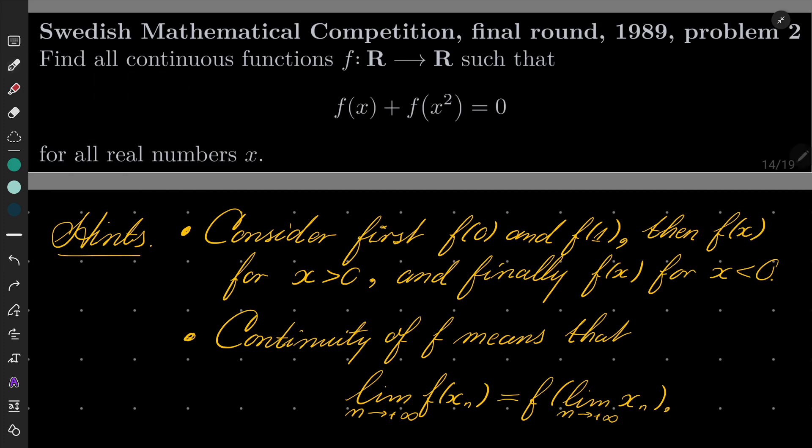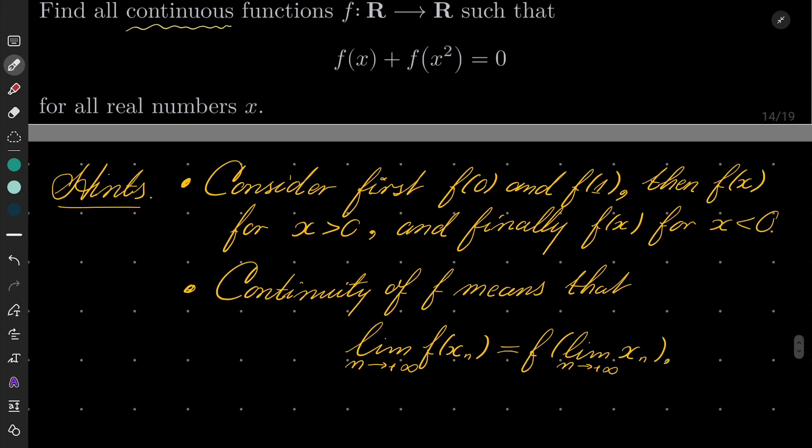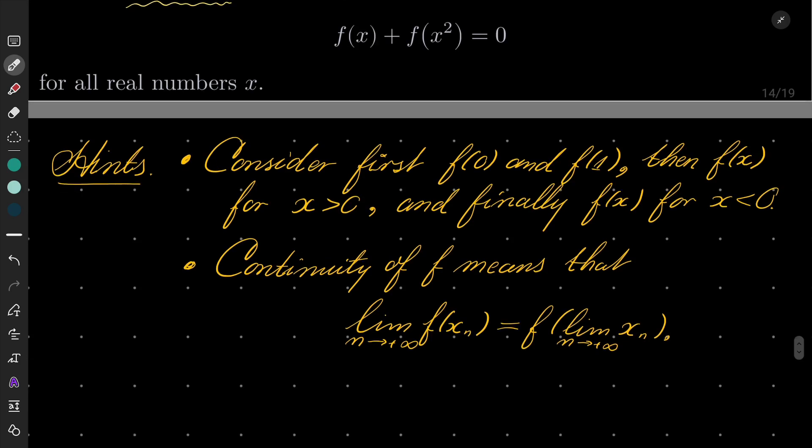Once again, our function, we are solving it in continuous functions. So my hints for this problem. First of all, consider first f of 0 and f of 1, find these two particular values, then consider f of x where x is positive, and finally consider f of x where x is negative. And also note that continuity of f means that we can take limit inside the function.